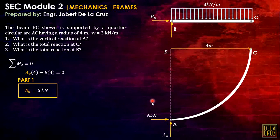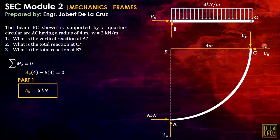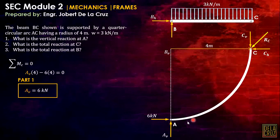Now for the total reaction at C: at point C we have CV and CH as components, and the total reaction RC is just the resultant of these two components. Let's discuss an important principle here.